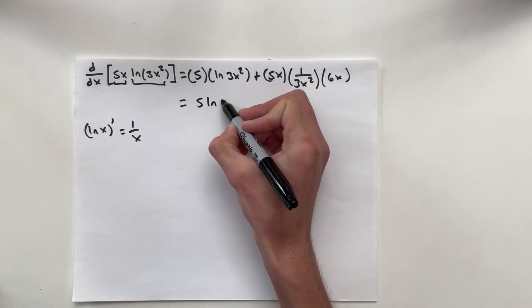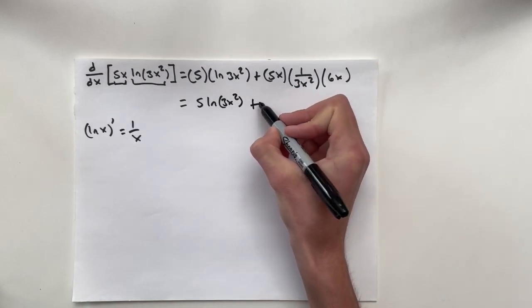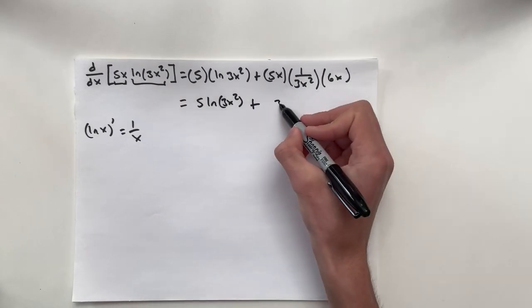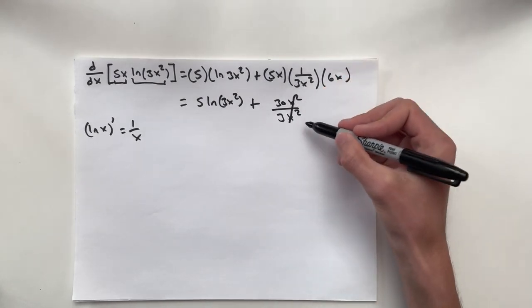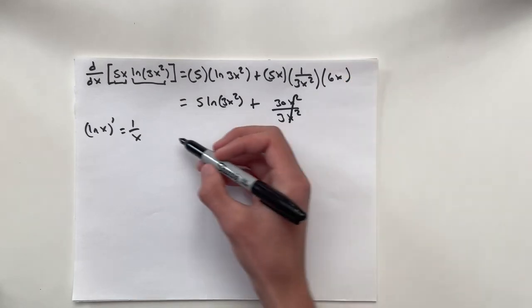5 natural log 3x squared plus 5x times 6x. That's 30x squared over 3x squared. The x squareds cancel, and 30 divided by 3 is simply 10.